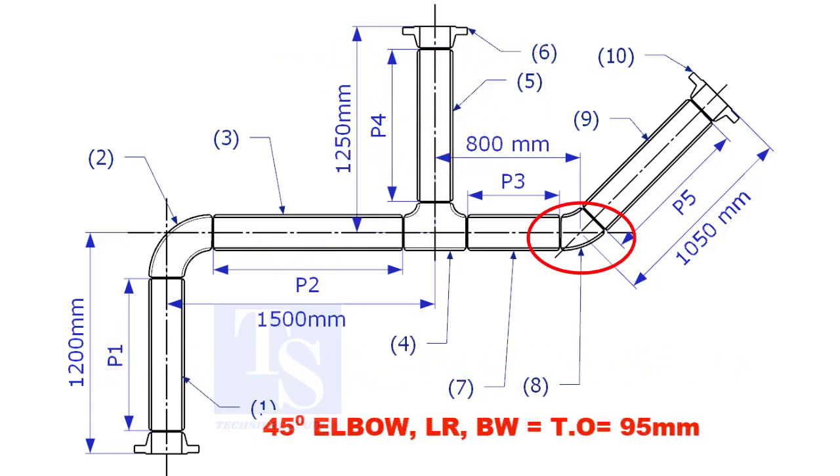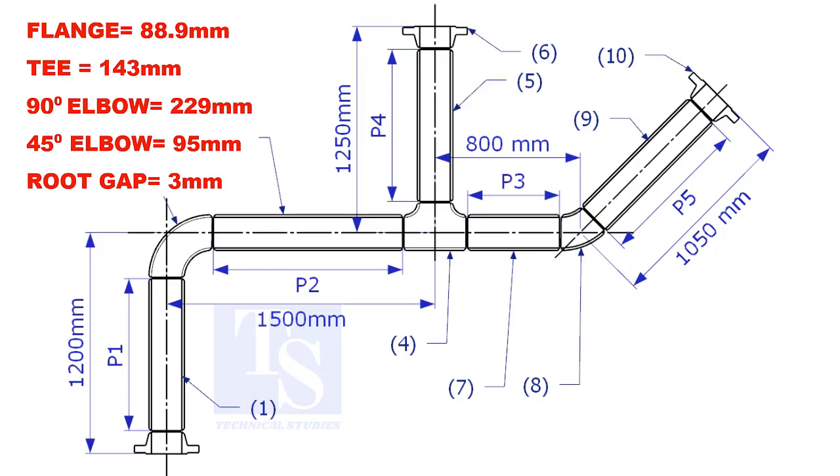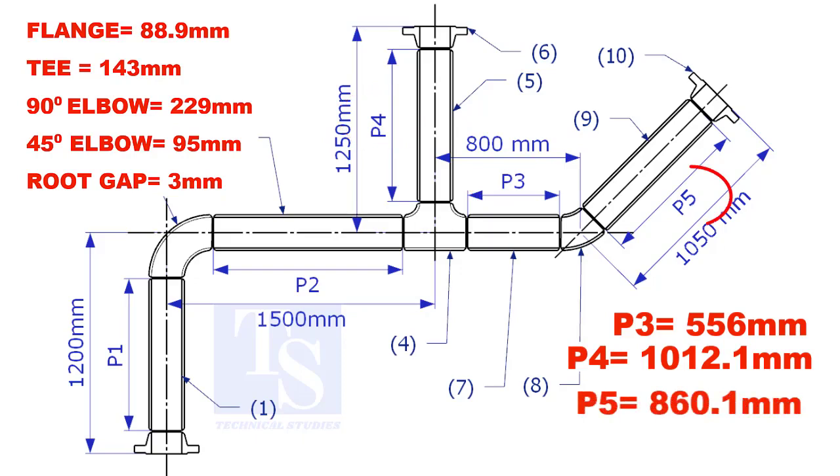Takeoff length of the 45 degree elbow is 95 millimeters. The true lengths of pipes P3, P4, and P5 are given. You can cross-check if the answers are correct or not. Please check the description for this sketch.